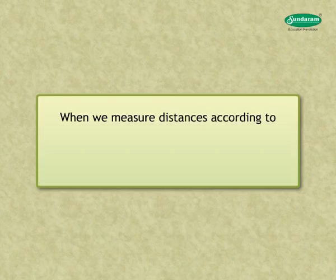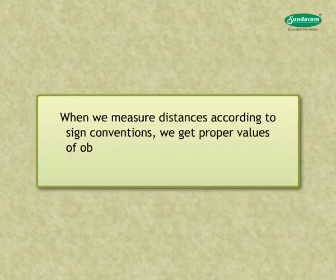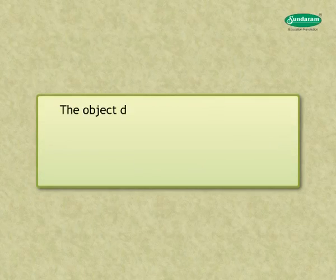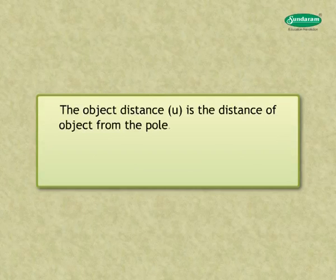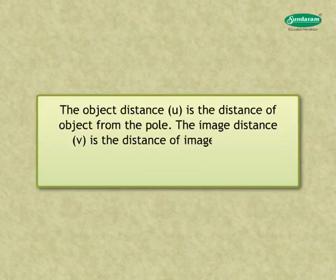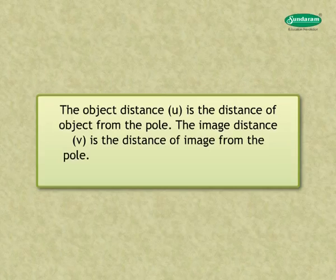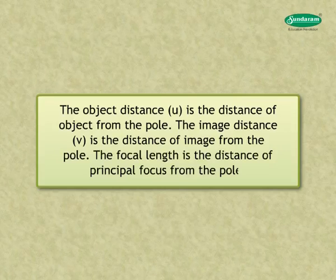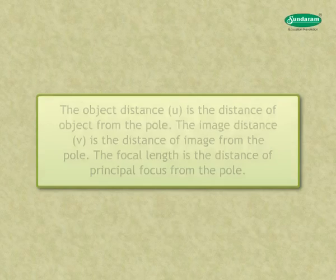Let us look at the mirror formula. When we measure distances according to sign conventions, we get proper values of object distance, image distance, and focal length. The object distance (u) is the distance of object from the pole. The image distance (v) is the distance of image from the pole. The focal length is the distance of principal focus from the pole.